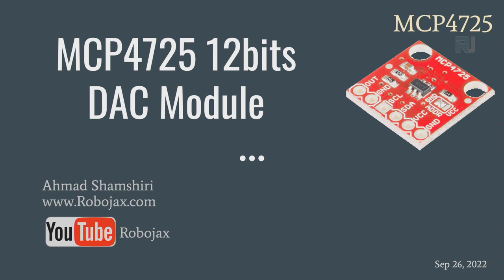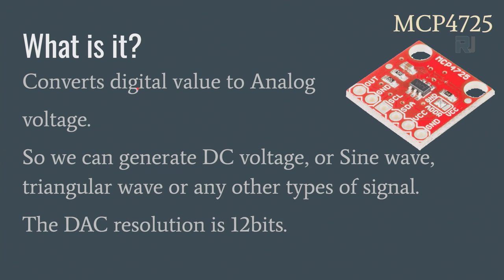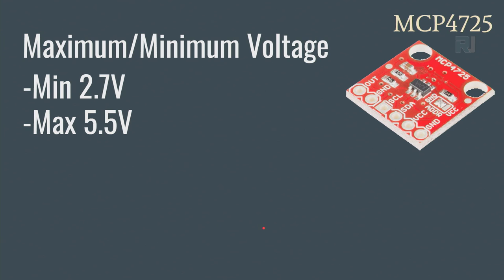Let's have a look at the specification of the module. This module converts a digital value to analog voltage — generating sine wave, DC voltage, rectangular, or any other waveform. That's why it's called a digital-to-analog converter. The resolution is 12 bits, which is one of the important facts to know.